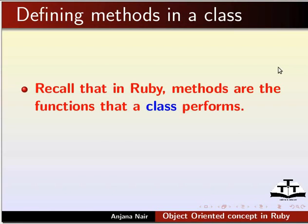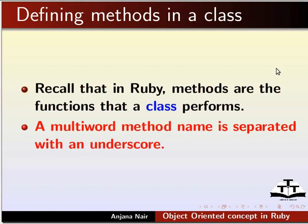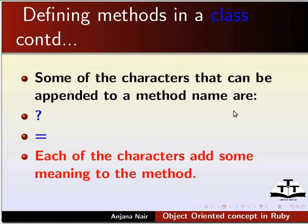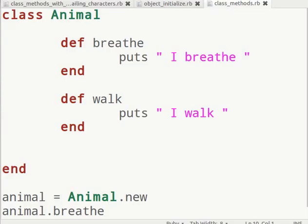Recall that in Ruby, methods are the functions that a class performs. Each method in a class is defined within the def and end block. A multi-word method name is separated with an underscore. Some of the characters that can be appended to a method name are question mark and equal to — each adds some meaning to the method. Create a new file in gedit and name it class_methods.rb.